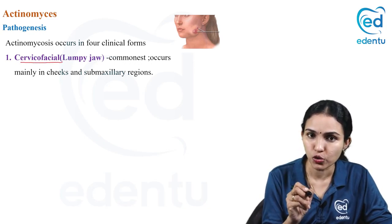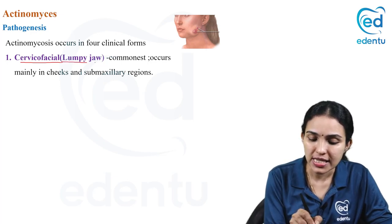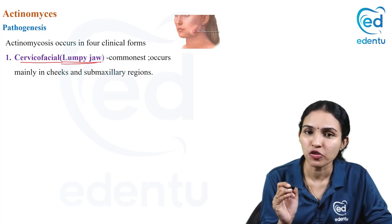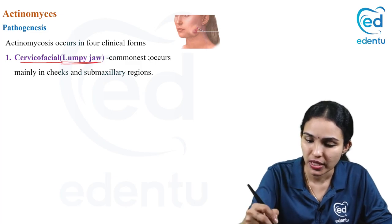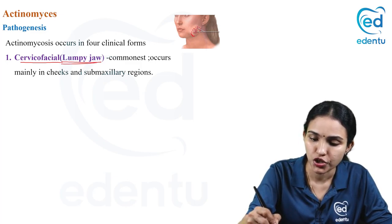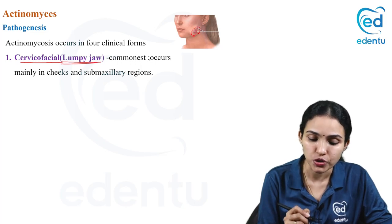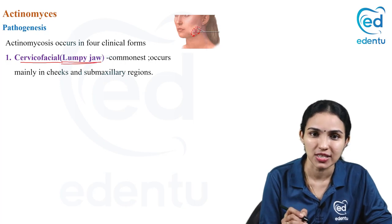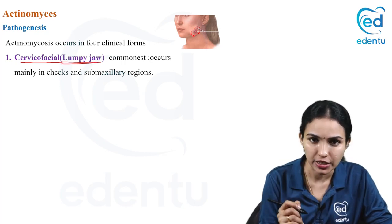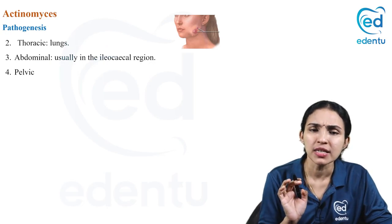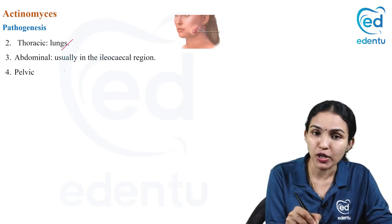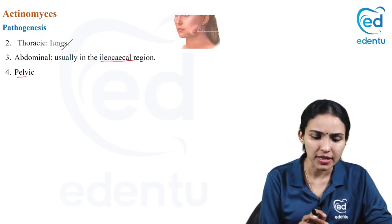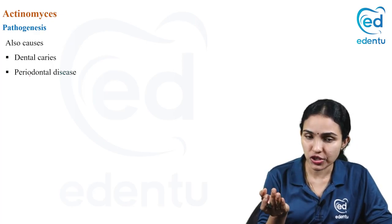Actinomycosis occurs in four clinical forms. The most common is the cervicofacial form, called lumpy jaw, occurring in the cheeks and submaxillary regions. There are also thoracic, abdominal, and pelvic forms — the thoracic form occurs in the lungs, the abdominal form is usually seen in the ileocecal region — but these are rarer forms.